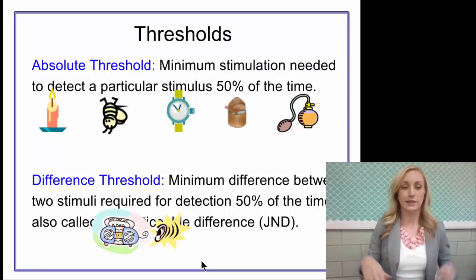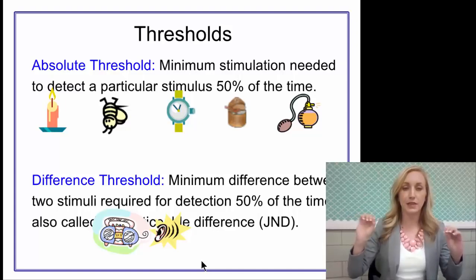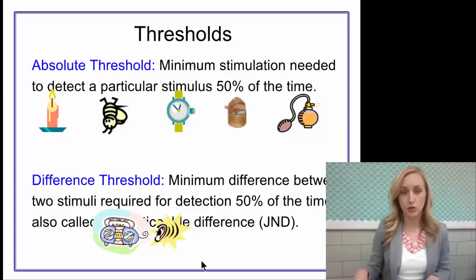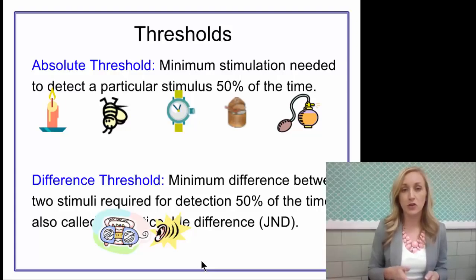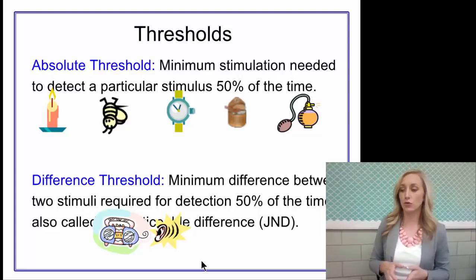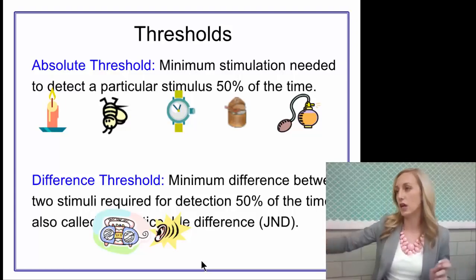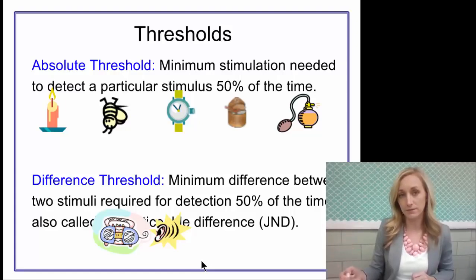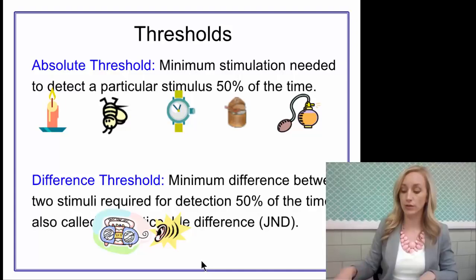Then we have the difference threshold. This is similar to the absolute threshold, except the stimulus is already existing — write that down. With difference threshold, the stimulus is already existing. It's the minimum difference between two stimuli required in order for you to detect it 50% of the time. This is also called just noticeable difference, or JND. For example, you're jamming to your favorite song in your car with the stereo turned up really loud — difference threshold says how much do you have to turn the music up or down in order to notice the difference? Once you notice it 50% of the time, you've met your difference threshold.